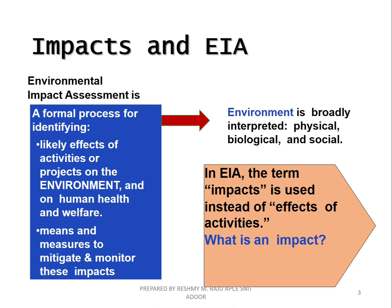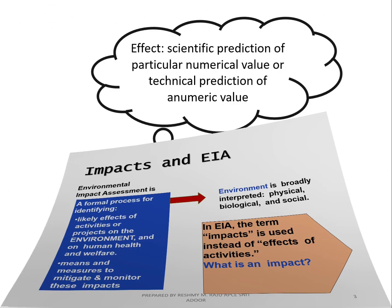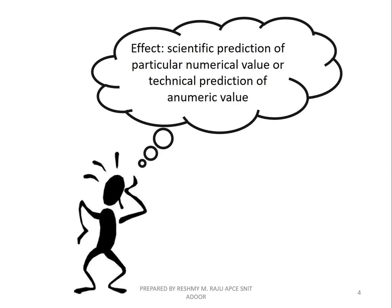Environmental Impact Assessment is not just a formal process. We are finding out what the different effects are that will be caused by a particular project on different levels — like environment, human health, and welfare. Effectiveness is a scientific or technical prediction of a particular numerical value.